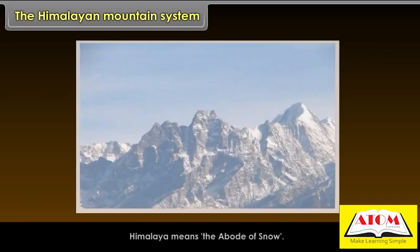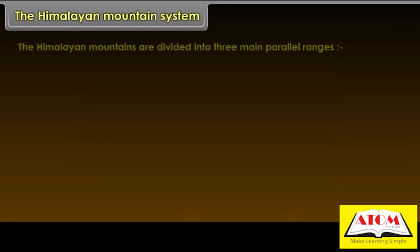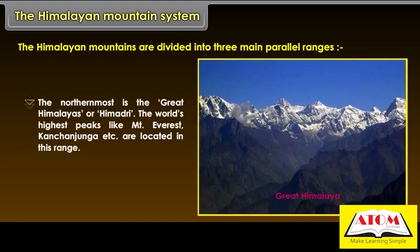Himalaya means the abode of snow. The Himalayan mountains are divided into three main parallel ranges. The northernmost is the Great Himalayas, or Himadri. The world's highest peaks like Mount Everest and Kanchenjunga are located in this range.